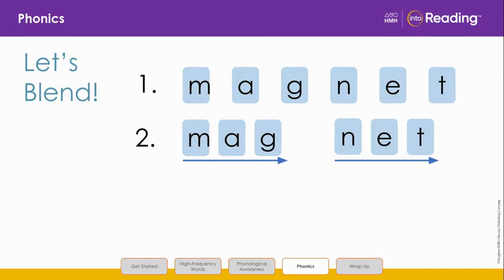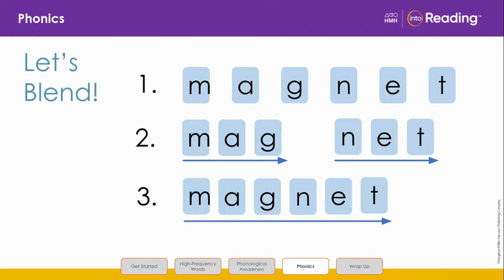Listen as I blend the sounds in the second syllable. N-e-t, net, net. Now blend the whole word with me. M-a-g-net, magnet.